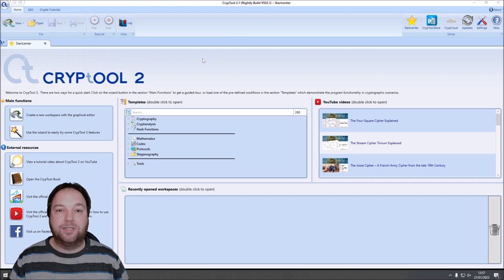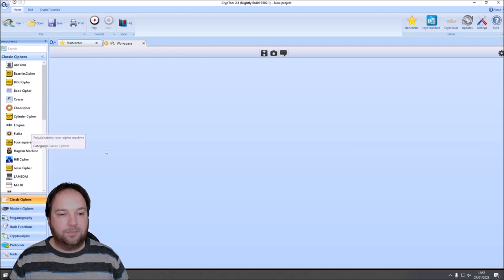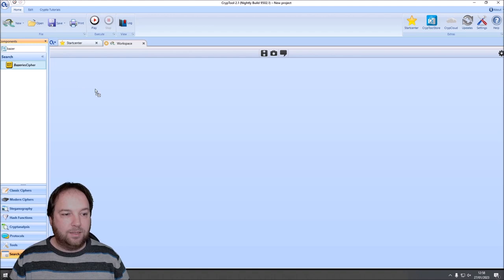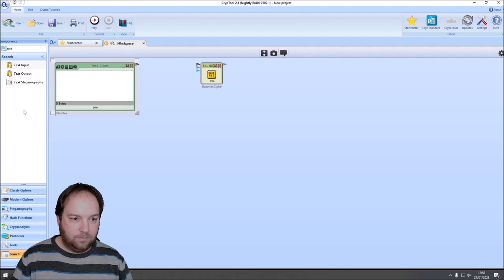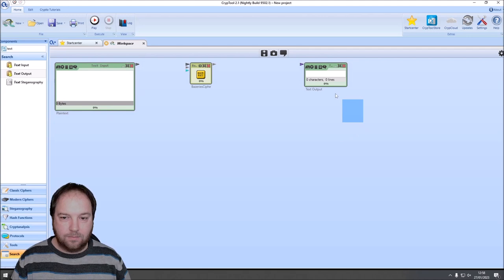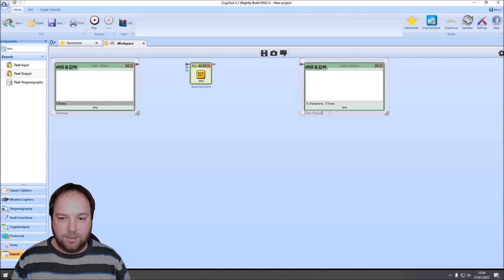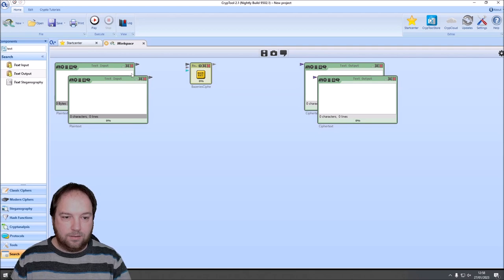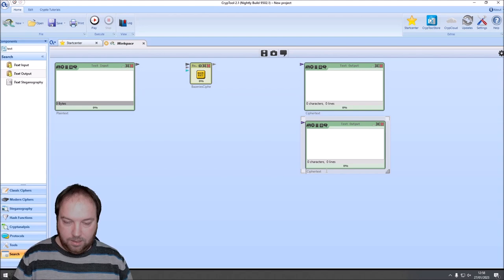In the workspace manager, I search for Bazeries. Here we have the Bazeries cipher. And we need text input. This will be our plain text. And we need a text output with biggest width and biggest height. This will be our cipher text. And we need a second text output. This will be our decrypted plain text.